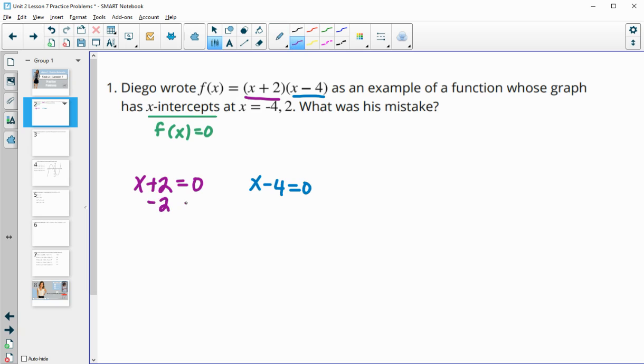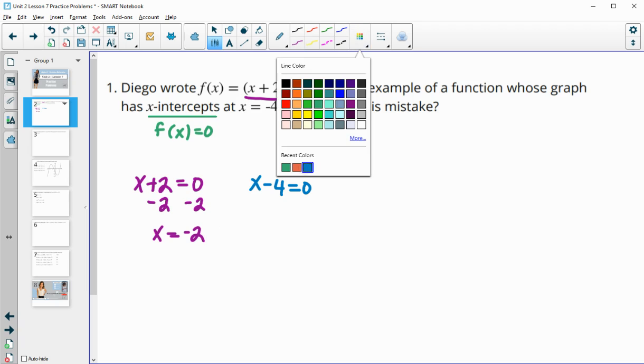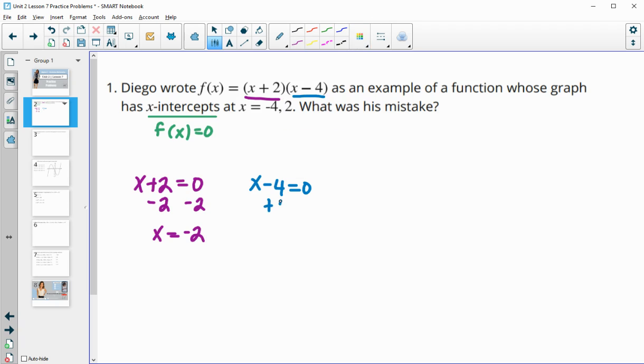When you solve, you do the opposite to bring this over. So we're going to get x equals negative 2 and x equals positive 4 because we're going to add 4 to get this to be 0. So the zeros are going to be opposite of the factors.